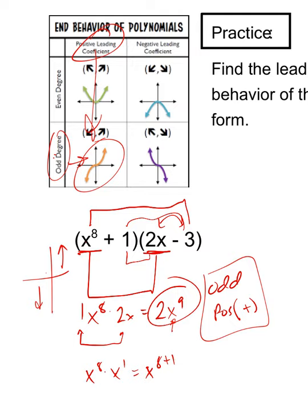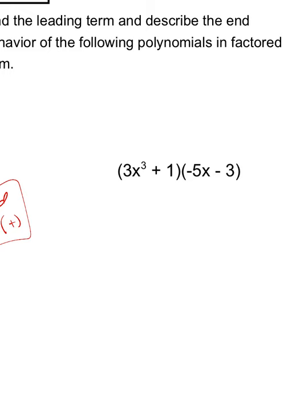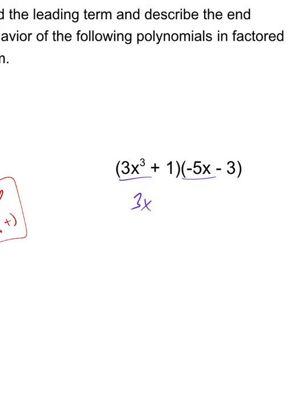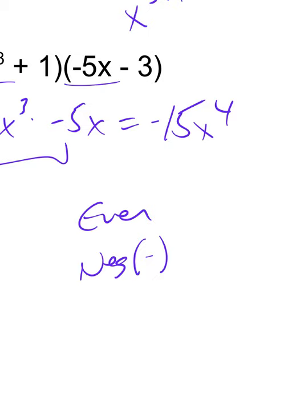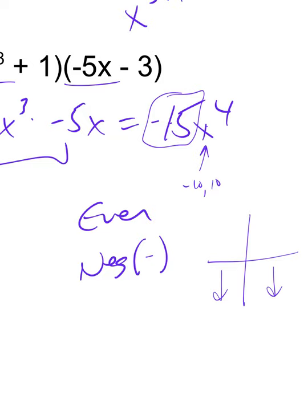The second one: first term times first term gives us 3x to the third times negative 5x. So 3 times negative 5 is negative 15, and x to the third times x to the first is x to the 3 plus 1 — x to the fourth. So we have negative 15x to the fourth: an even degree and a negative leading coefficient. Whether we put in negative 10 or positive 10, raising to the fourth gives a positive, and a positive times negative 15 always leads to a negative — so both ends go down.